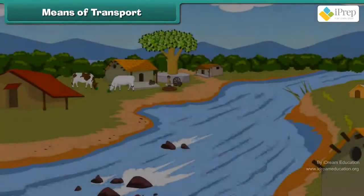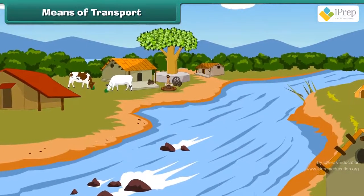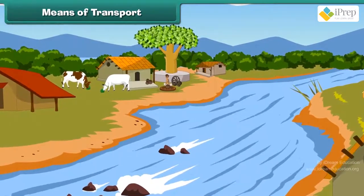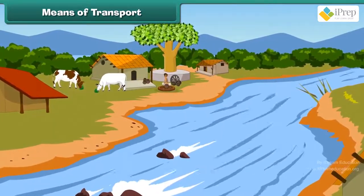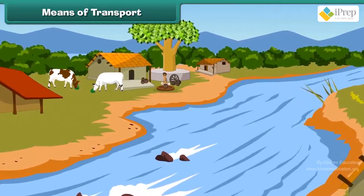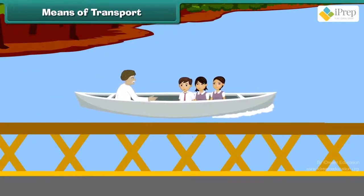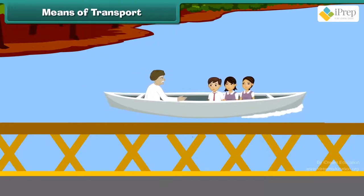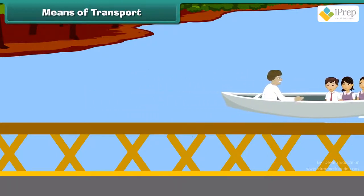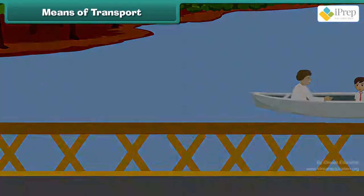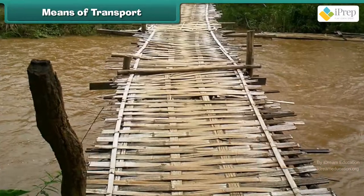In places where children have to cross a river or water body to reach school, they use boats. For small streams of water, a bridge is there to cross it. A bridge can be made of cement and sand or can be made out of bamboo.